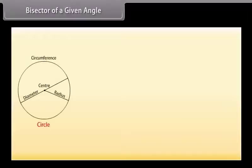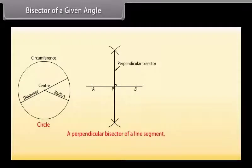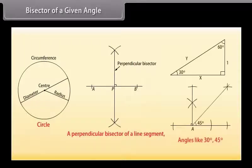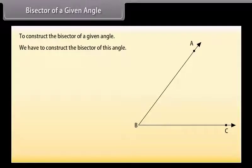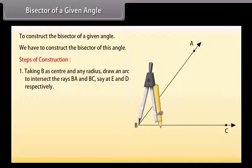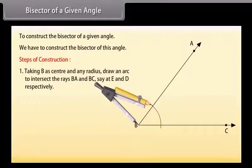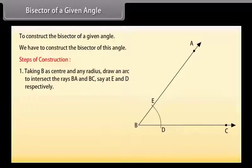Now we will learn to construct the bisector of a given angle. Let us take an angle ABC. We have to construct the bisector of this angle. First of all, taking B as center and any radius, we will draw an arc to intersect the rays BA and BC, say at E and D respectively.